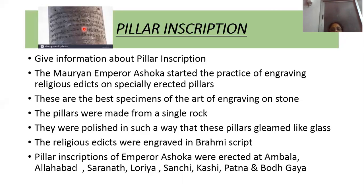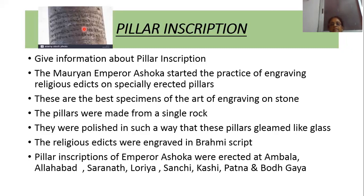The pillar inscriptions of King Ashoka were found from many places: Ambala, Allahabad, Sarna, Lorya, Sanchi, Kashi, Patna, and Bodhgaya. King Ashoka started the practice of writing religious orders on specially erected pillars. The pillars were made from single rocks and polished to shine like glass. The religious edicts were written in Brahmi script.